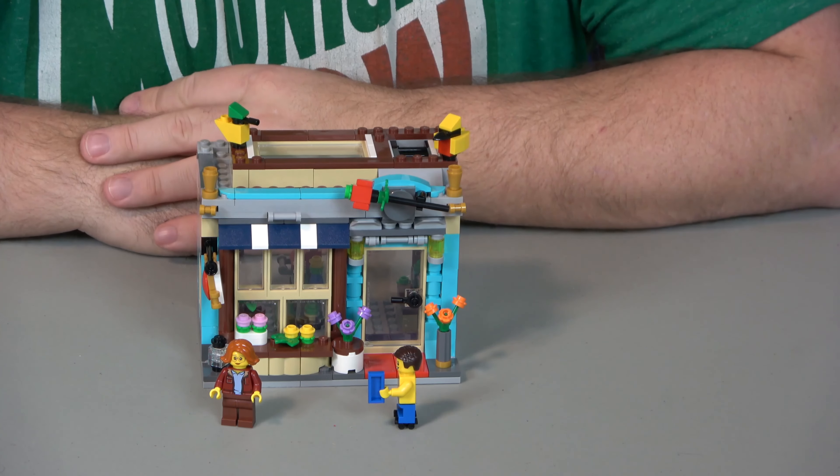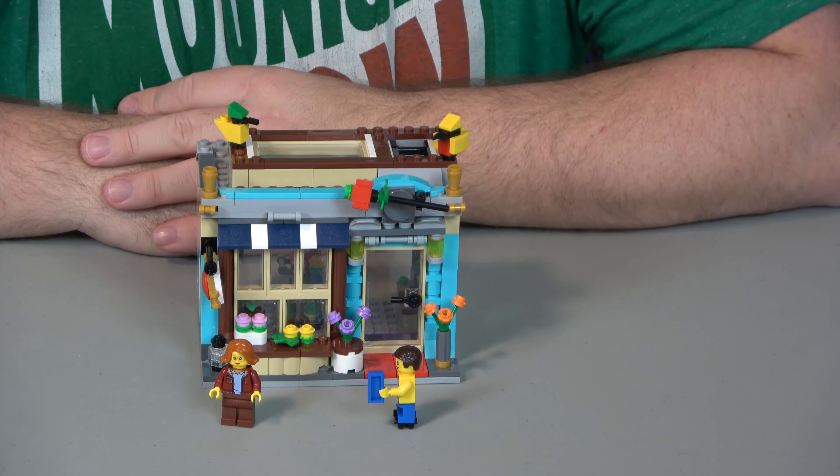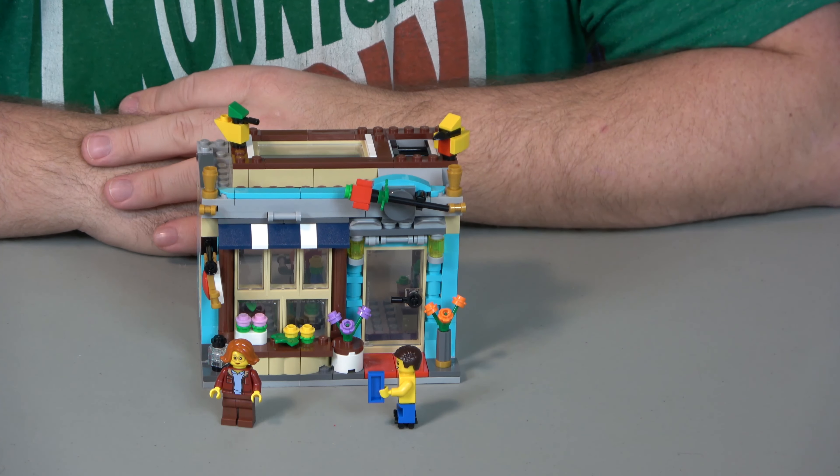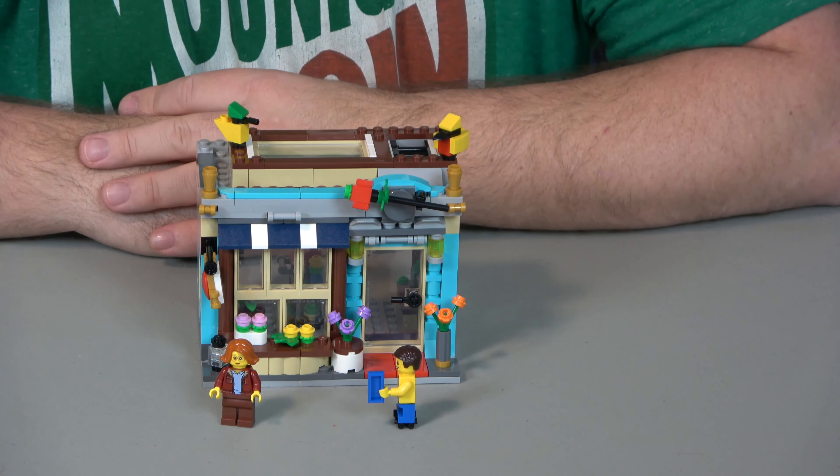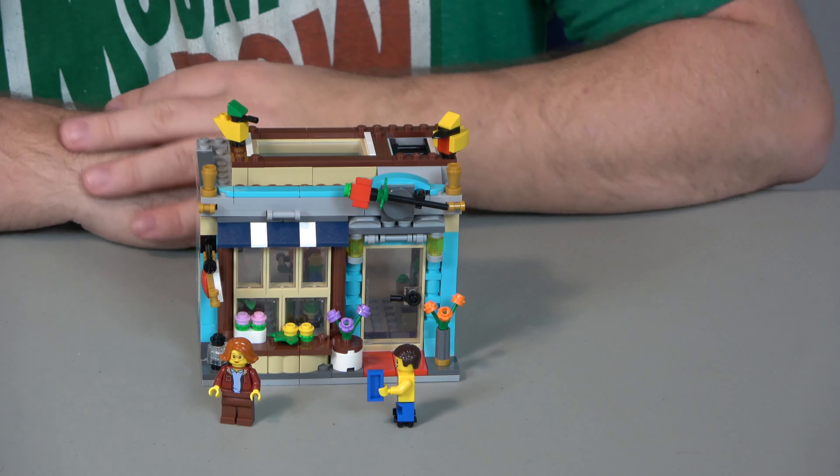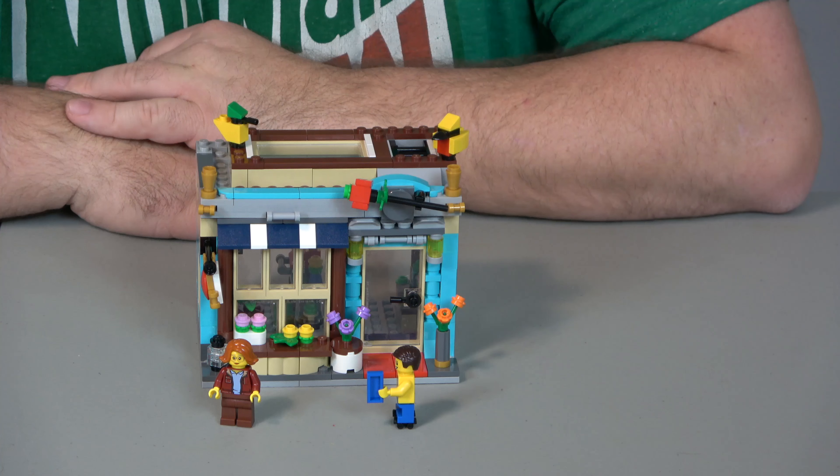This includes the build, third version of set number 31105, the Townhouse Toy Store. However, this is not a townhouse and this version is not a toy store. This one instead is a flower shop, like a florist.